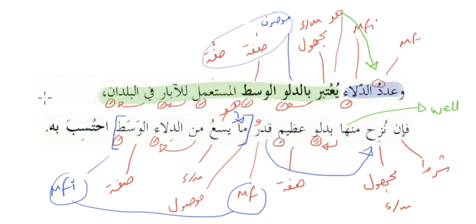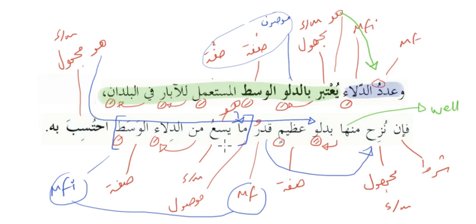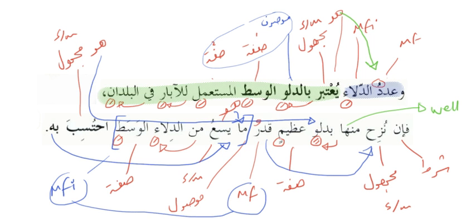محتسب — this is the فعل مجهول, single masculine — it will be calculated. The ضمير هو goes back to دل عظيم — the large bucket will be calculated according to it. And the ضمير for it will go back to ما. So all of this becomes the شرط.